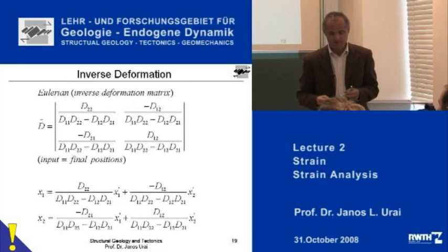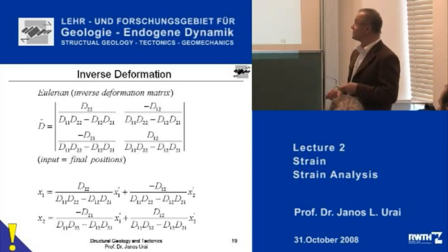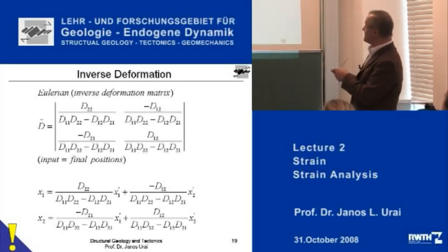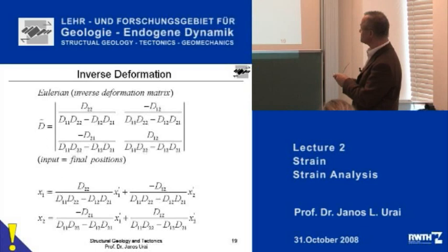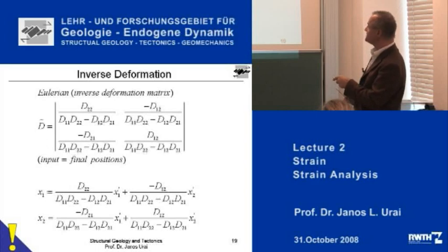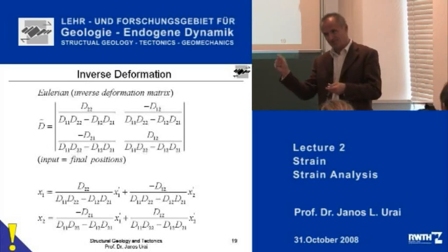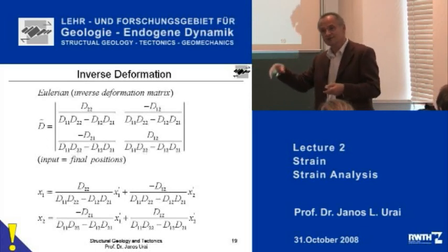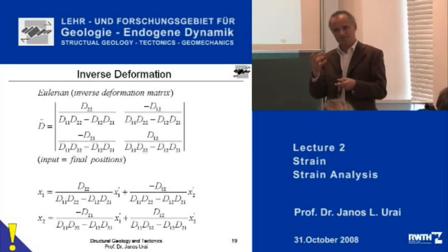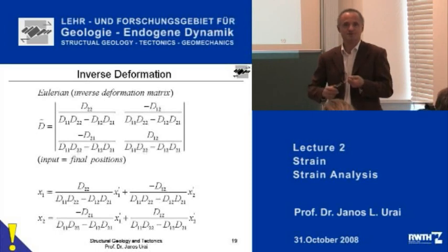That is the next equation I want to show you: the inverse deformation matrix. The first component is D two-two divided by the determinant. This is the second component, this is the third, and this is the fourth. So here are the transformation equations just for completeness. If you have a deformation with the four components, you can very easily compute what matrix you need to deform your ellipse back into the original position. That is quite important to know.